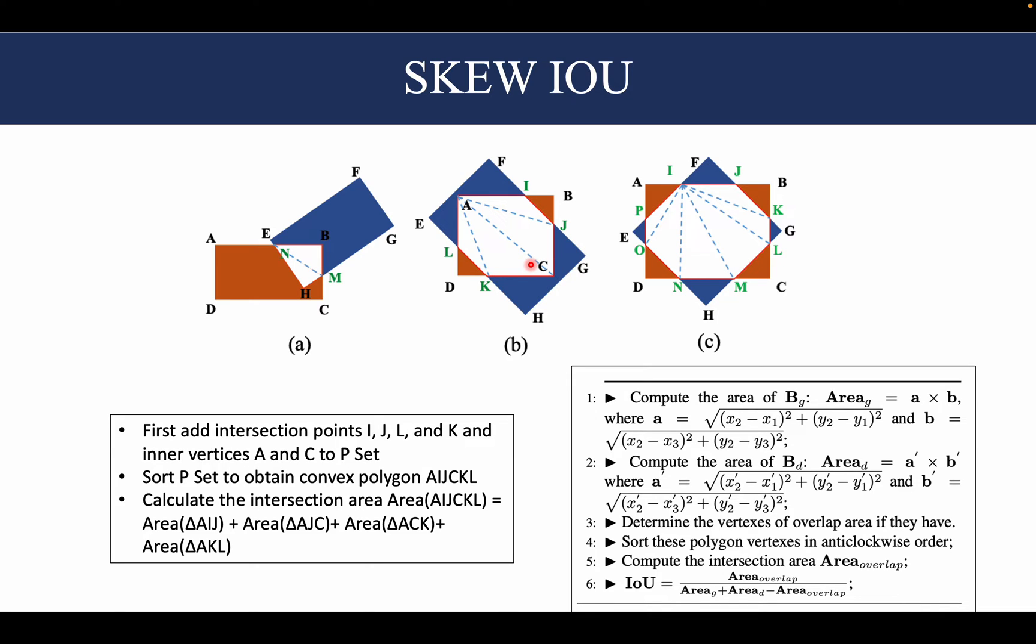How this is done is, firstly, we determine the vertices of overlap—in this case, that would be L, K, I, J, and also these inner vertices A and C. Then we sort these vertices into an anti-clockwise order and then compute the area. That's done by first individually calculating the area of these inner triangles, specifically triangle ALK, then triangle AKC, triangle ACJ, and triangle AJI. Once we've computed these areas, we add all these triangle areas to get the area of intersection.